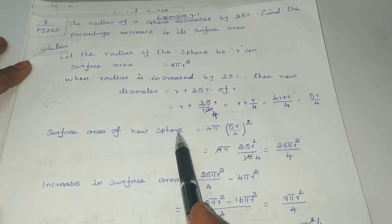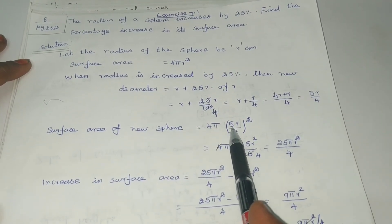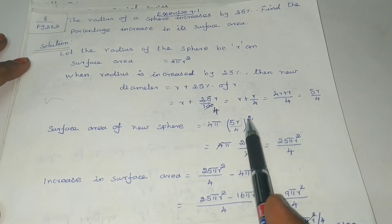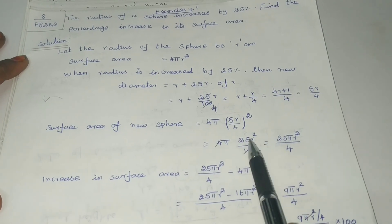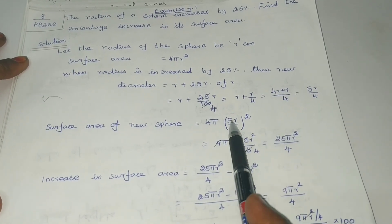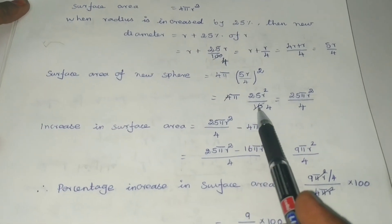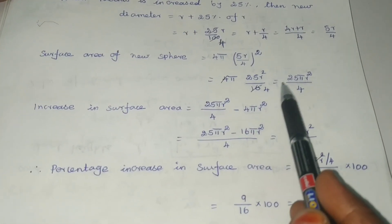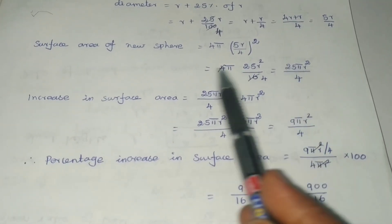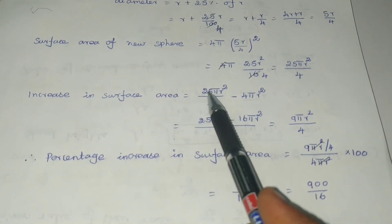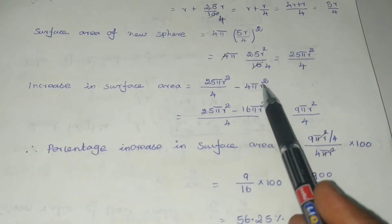The surface area of new sphere is equal to 4πR², where R² value is (5R/4)² = 25R²/16. So the new surface area is 4π × 25R²/16 = 25πR²/4.